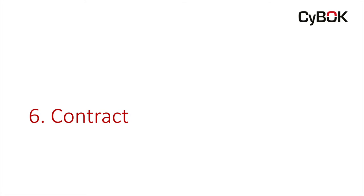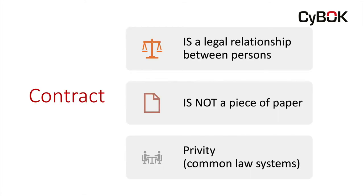Let's look now at the law of contract. Contract describes a legal relationship between persons. The simplest definition I've found is: a contract is a promise or a series of promises that the law will enforce. Contract does not describe a piece of paper — this often causes confusion where people get focused on the paper, the signature. No, the contract is the relationship. And finally, as an introductory comment on contract, at least in common law systems, remember that only someone who is a party to a contract normally has the right to enforce that contract against another party — we call this the rule of privity.